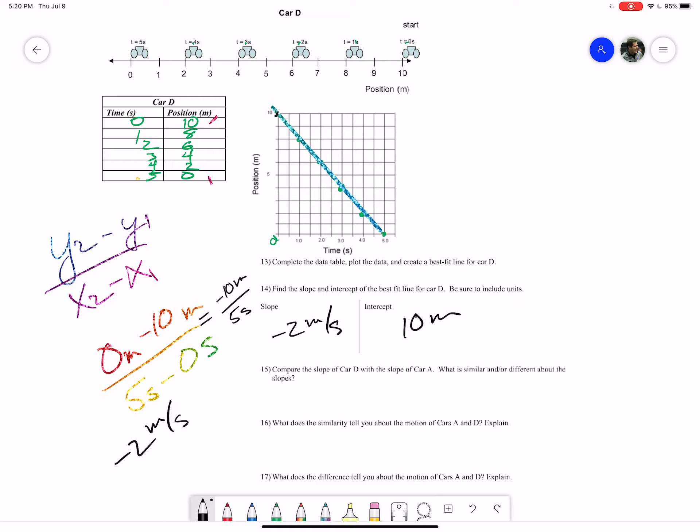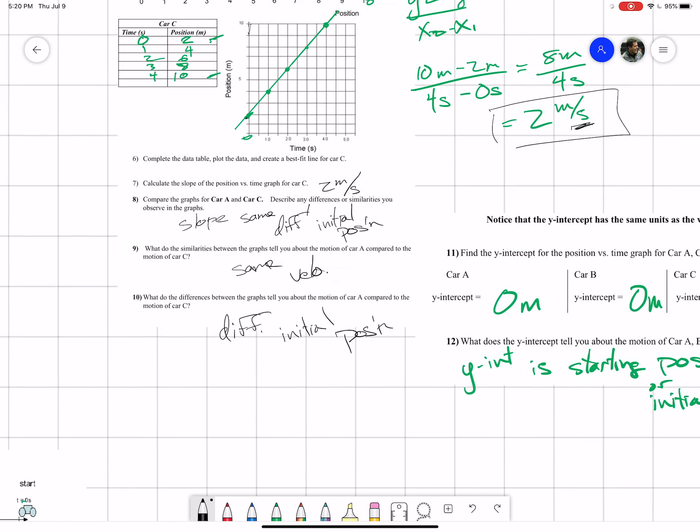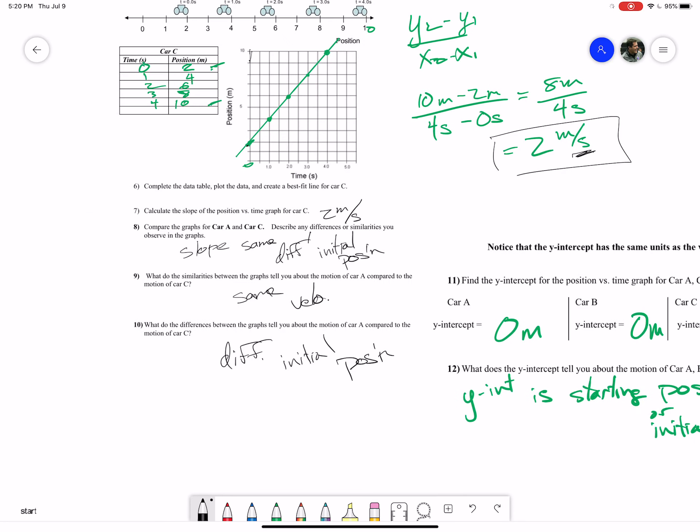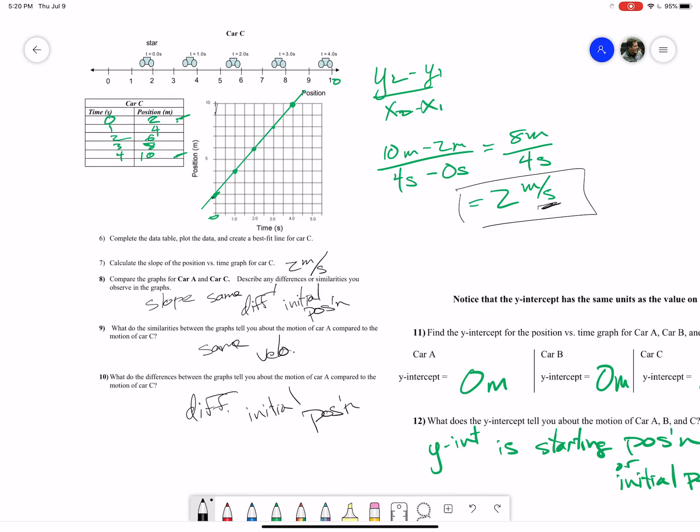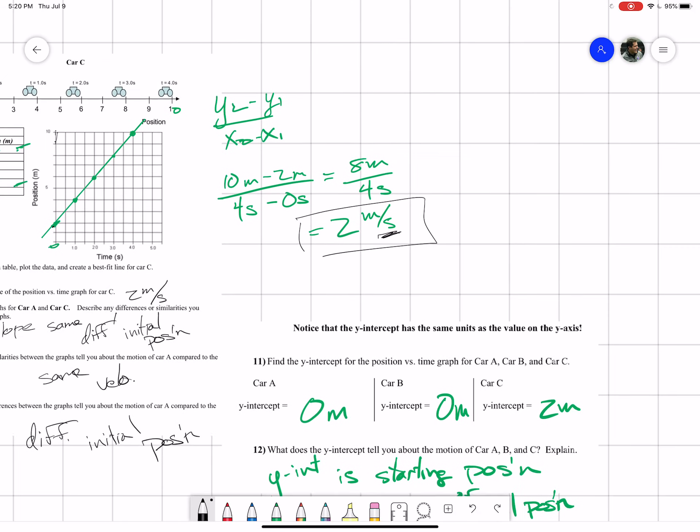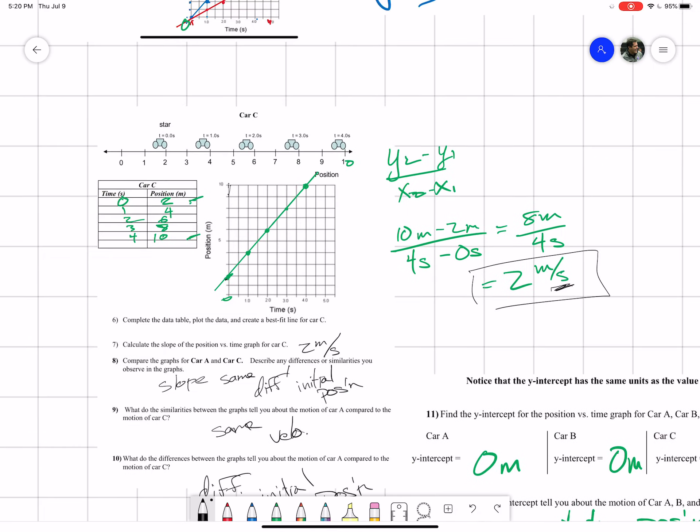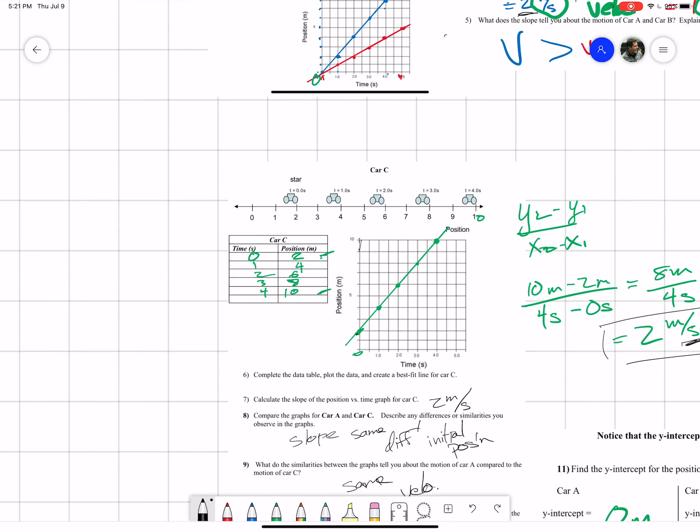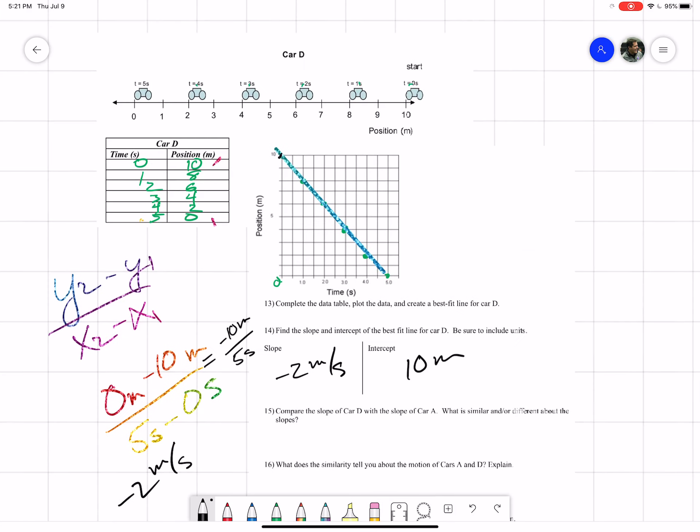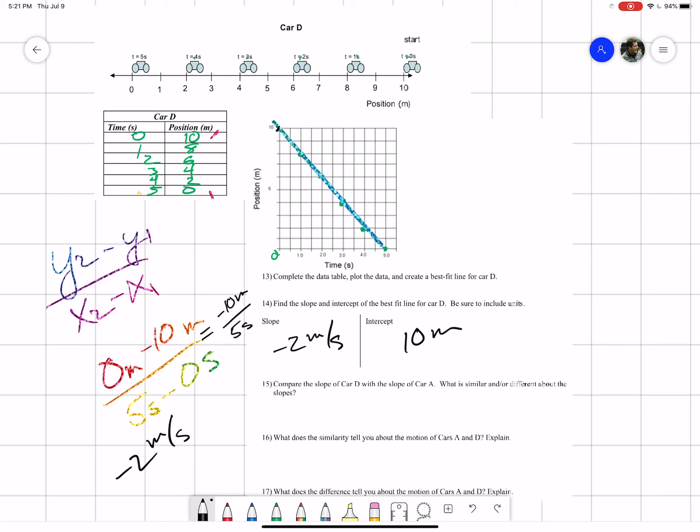Let's look at slope of Car D, which we're doing, and the slope of Car A. We got a slope of Car A, it's found over here. Our slope for Car A was two meters per second. That's what we got. Slope for Car A was two meters per second, positive two meters per second. Well, for Car D we got negative two meters per second. Same numbers but negative to each other.